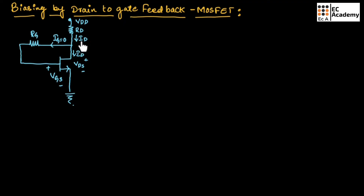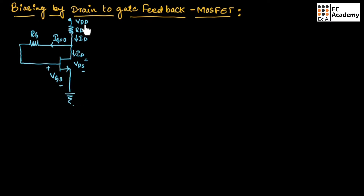Here, ID is the current flowing through the drain terminal. Since IG is equal to 0, the same current will flow through this branch as you can see here. VGS is the gate to source voltage, VDS is the drain to source voltage, and VDD is the power supply. VGS will be the input voltage and VDS will be the output voltage.